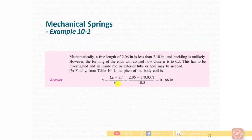Finally, the pitch is calculated from table 10/1: pitch = (free length − 3 × wire diameter) / active number of coils. The pitch comes out to 0.186 inches. This completes the spring design based on deflection and stress analysis.